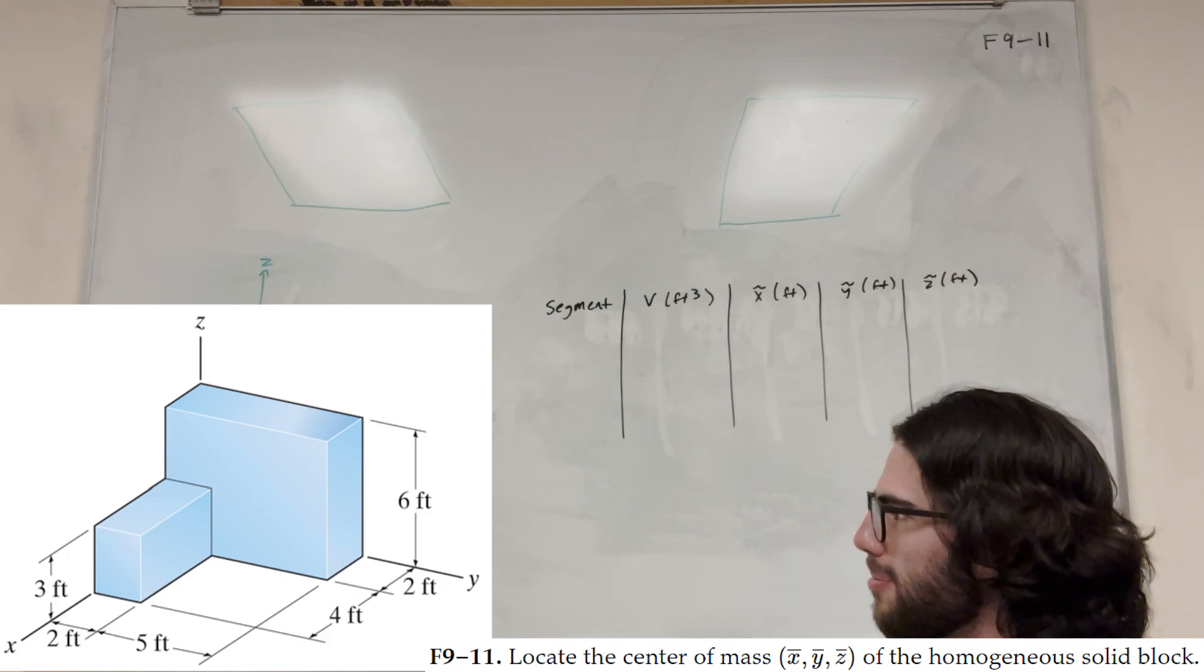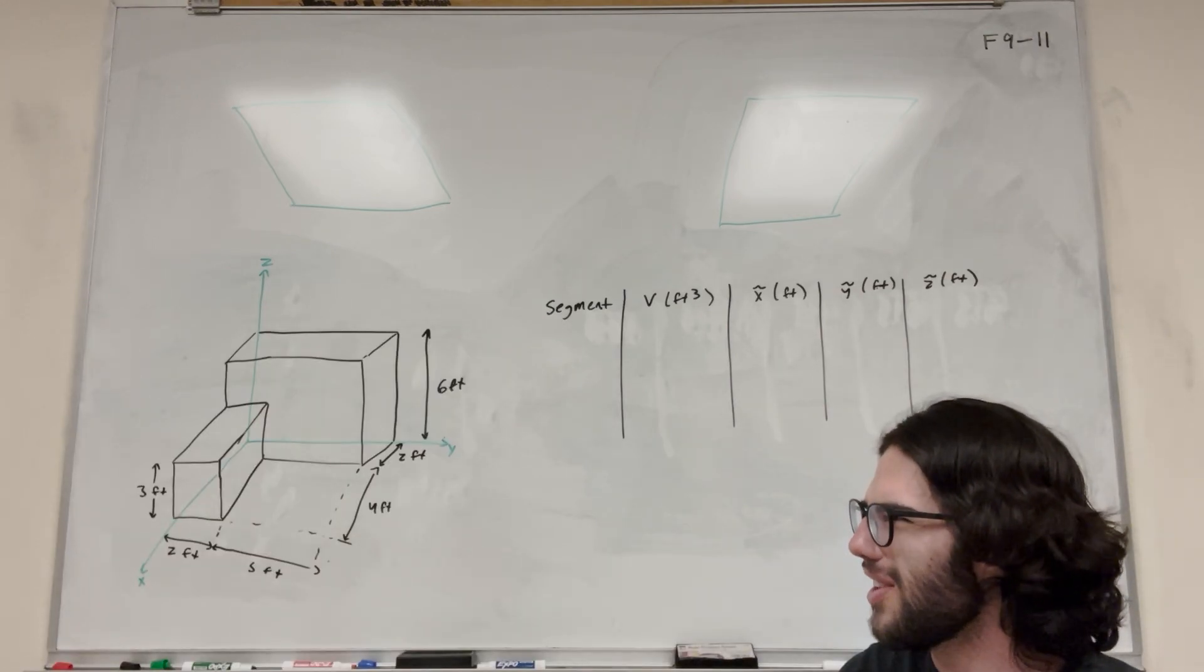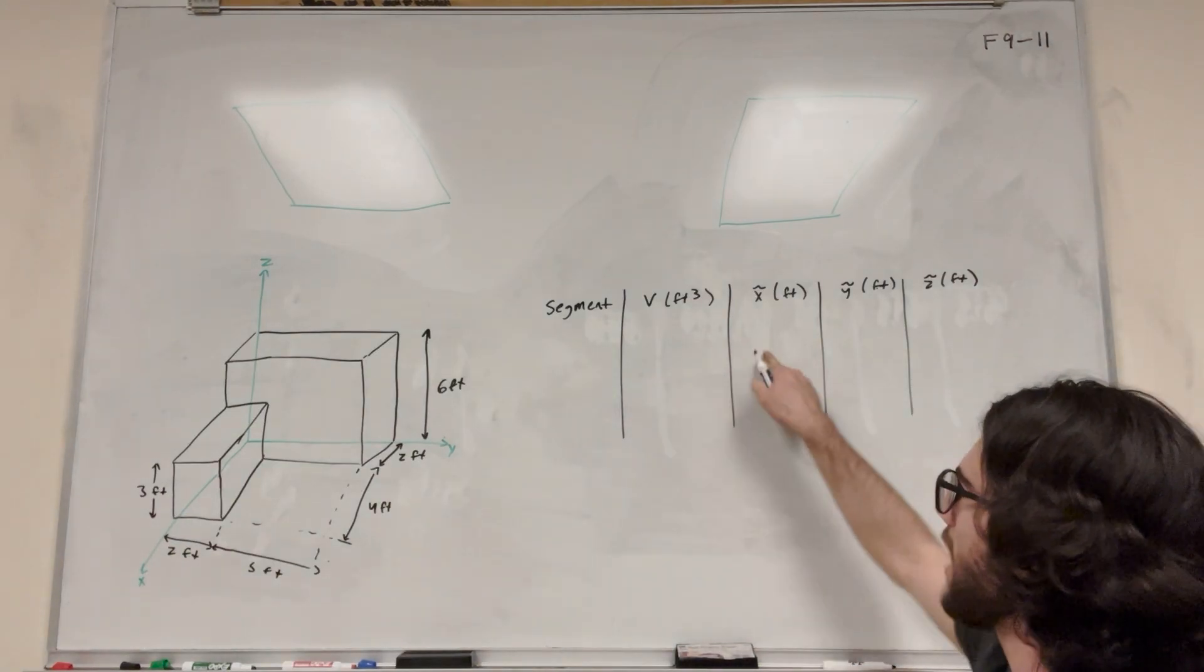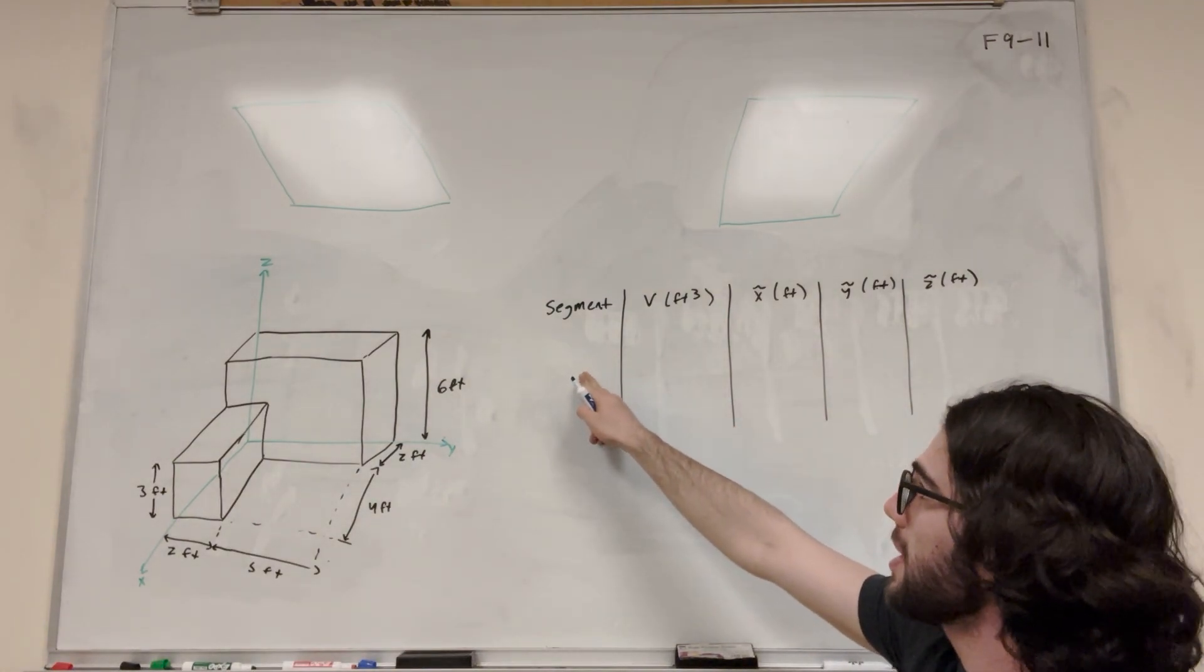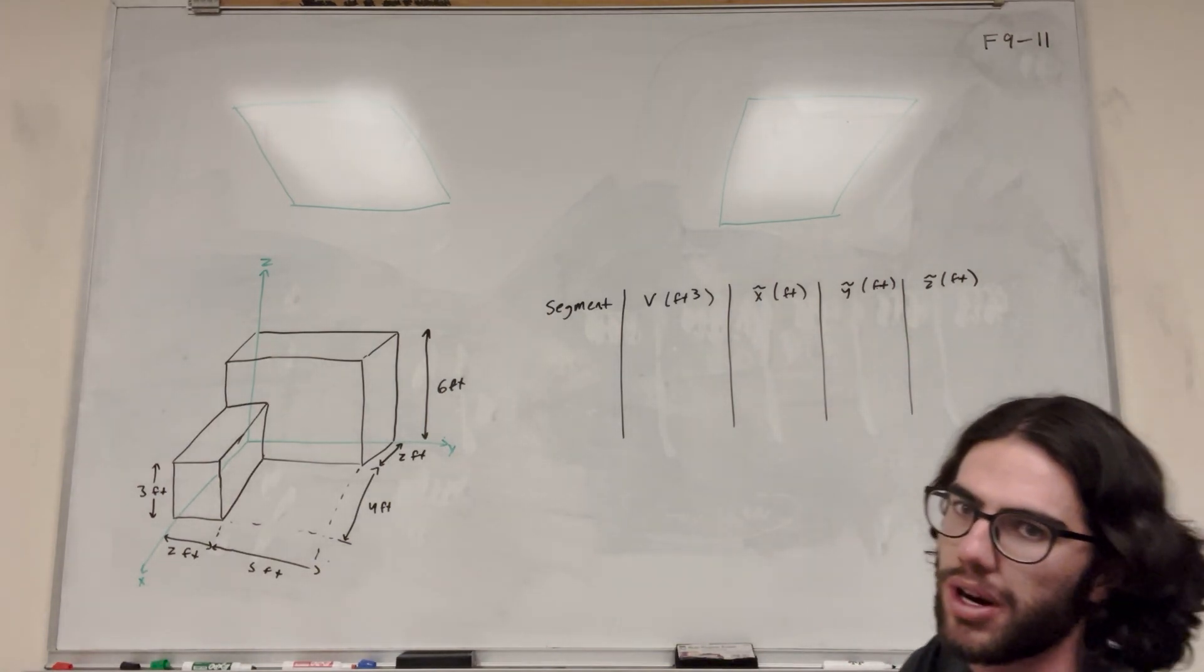Alright, so we have these two shapes, right? We have a rectangle and another rectangle, or I guess a cube thing and another cube. Anyway, we're going to use this table to figure that out. So this table is what it recommends in the book. It says segment, volume, and then we're going to find the x-bar, y-bar, and z-bar of each one of them.